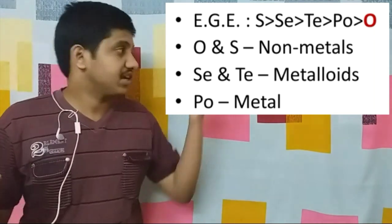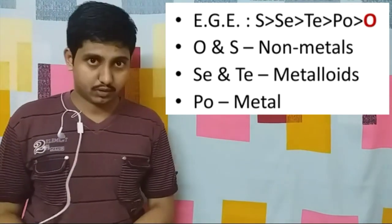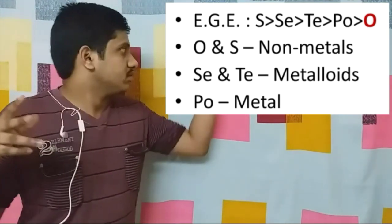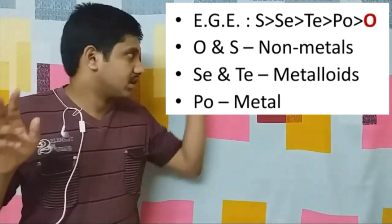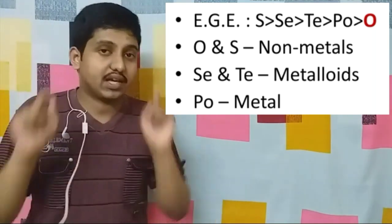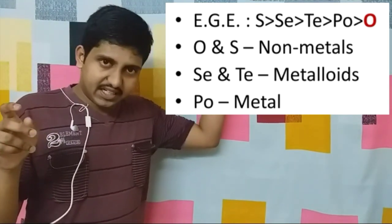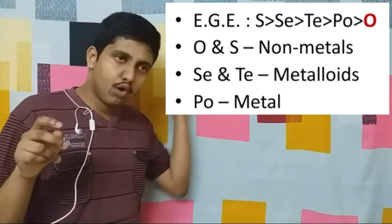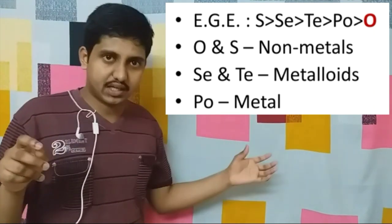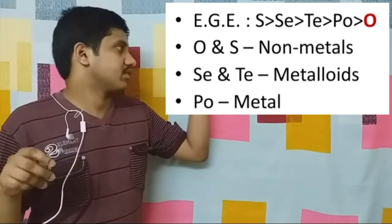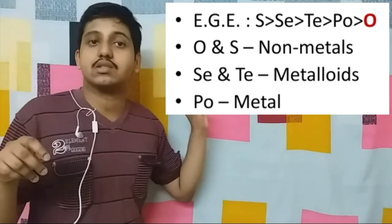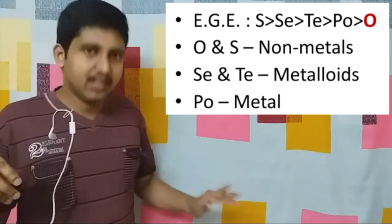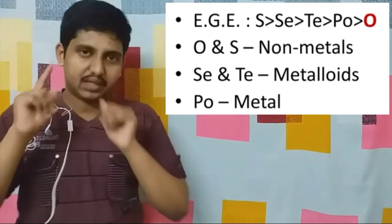You have one exception here: electron gain enthalpy. Electron gain enthalpy is the only exception. It decreases down the group — from more negative value to less negative value — but only starting from sulfur, and the least negative value is for oxygen. So the order is sulfur, selenium, tellurium, polonium, and then oxygen has the least negative electron gain enthalpy. Remember that point.